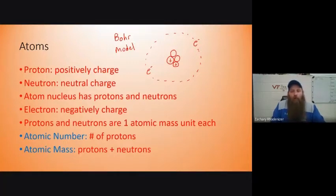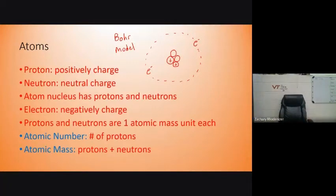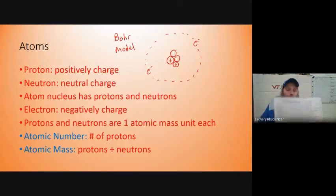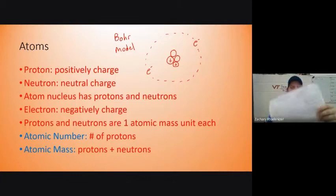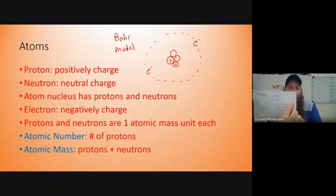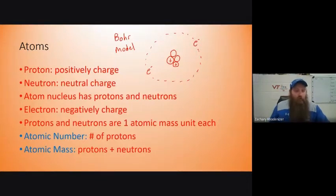Anytime you look at the periodic table, it has numbers. The periodic table has numbers at the bottom underneath each element — whole numbers, going from one up to about 118 on newer periodic tables. That number is called the atomic number. For example, magnesium is 12, sodium is 11, hydrogen is 1, helium is 2. The atomic number is based on how many protons there are.